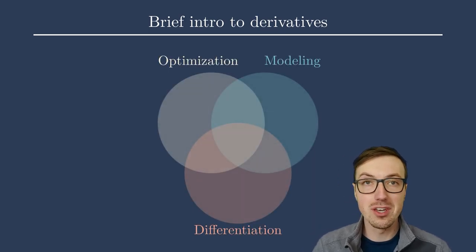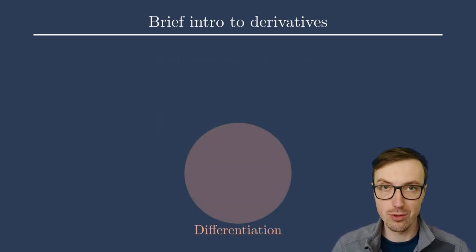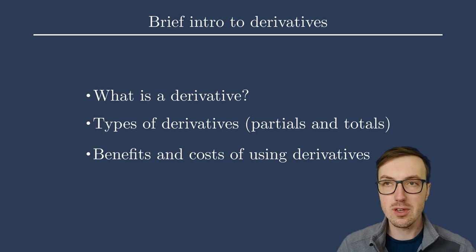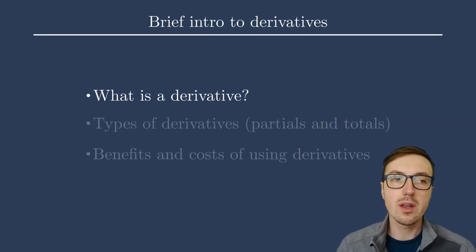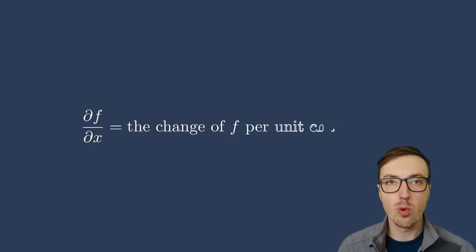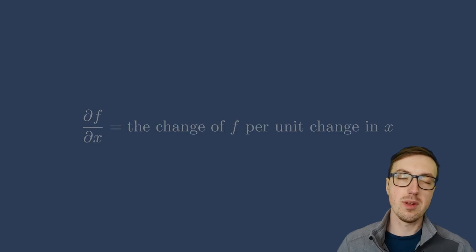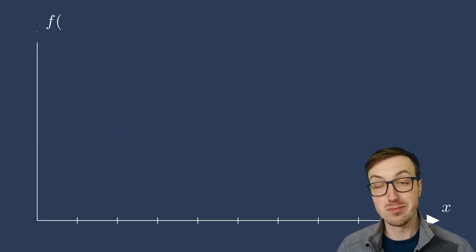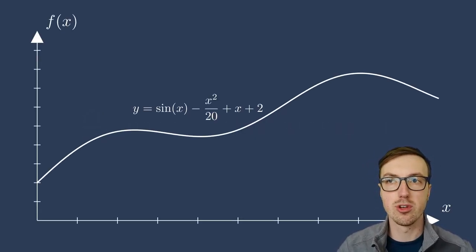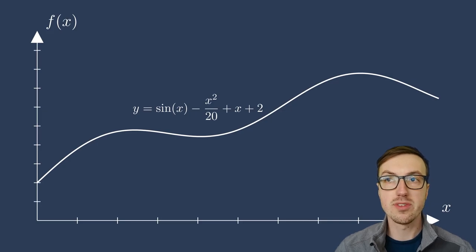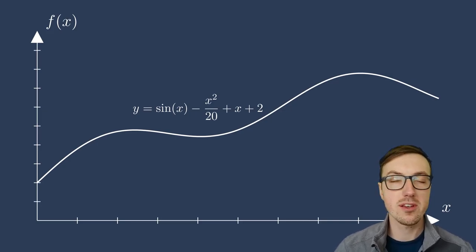This, of course, falls within the differentiation subcategory of this course. So first, again, I just want to anchor everybody. Let's talk about what is a derivative. It's easy for me to think about a derivative as kind of the slope of a function. The derivative is the change in the function with respect to x, the change of f per change in x. Let's just plot out a simple function here. Maybe it's not too simple. It is a nonlinear function here. But we have y equals sine of x minus x squared over 20 plus x plus 2.